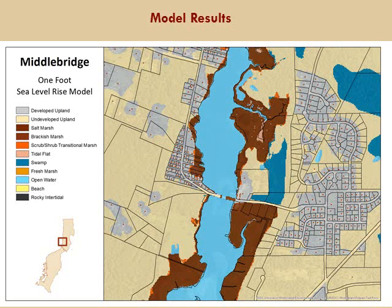At one foot of sea level rise it's not very dramatic, but you can see some tidal flats starting to work their way in and some transitional marsh working its way upland. In the elevation data, you come up against some pretty steep slopes right here. As Wendley was talking about with natural barriers as well as man-made barriers, this certainly qualifies. There are some very steep areas right adjacent to the salt marsh, so it doesn't have very many places to go.